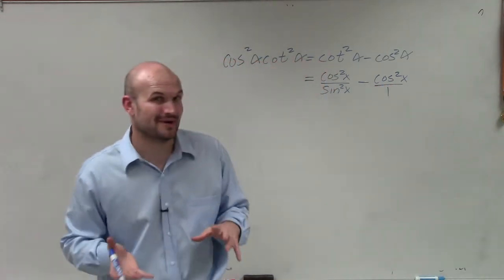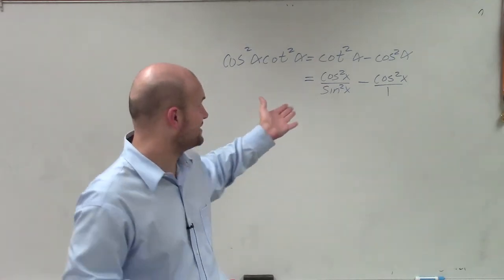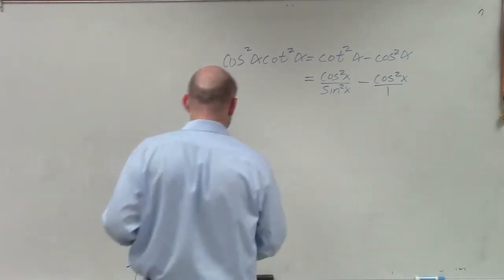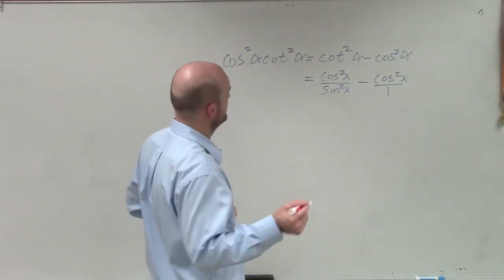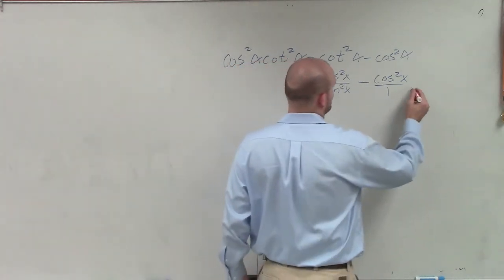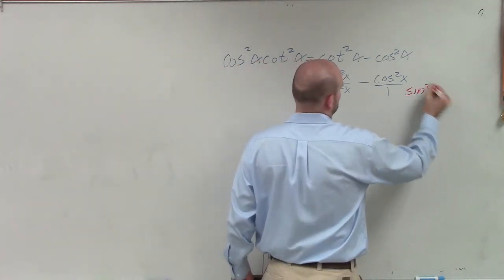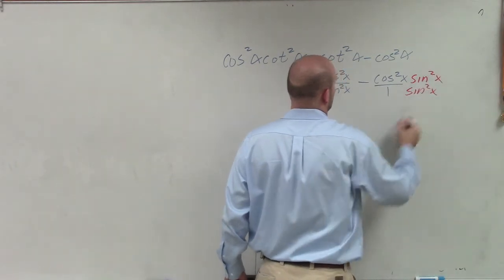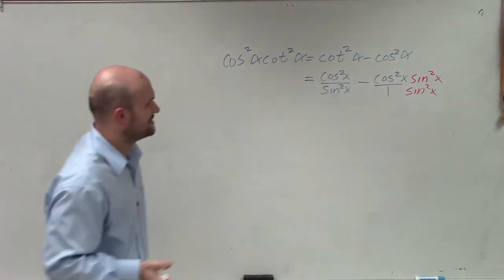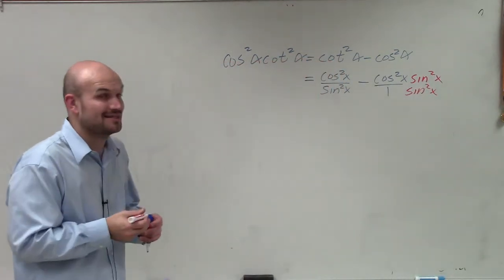Now, to go and subtract these, what I would have to do now is go ahead and combine, get the common denominators, which would be for me to multiply by sine squared of x times sine squared of x. And still, I'm going to be able to see that's still not going to get me exactly where I want to be right off the bat.